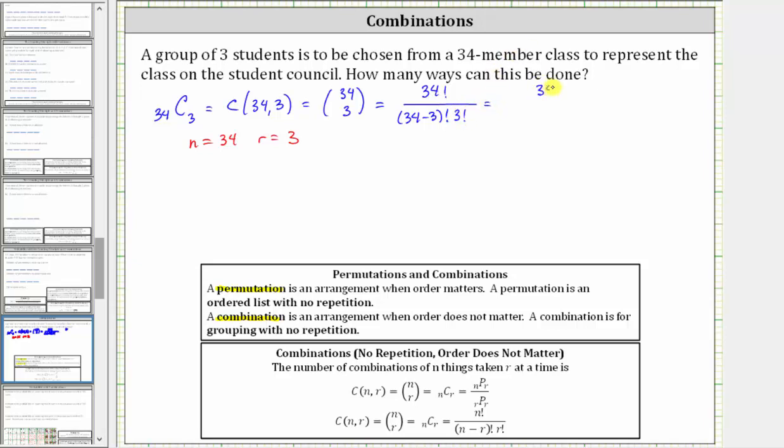Simplifying, we have 34 factorial divided by the product of 31 factorial and 3 factorial. Now to begin simplifying, let's expand 34 factorial. Notice we have 31 factorial in the denominator. So let's write 34 factorial as 34 times 33 times 32 times 31 factorial, divided by the product of 31 factorial and 3 factorial.